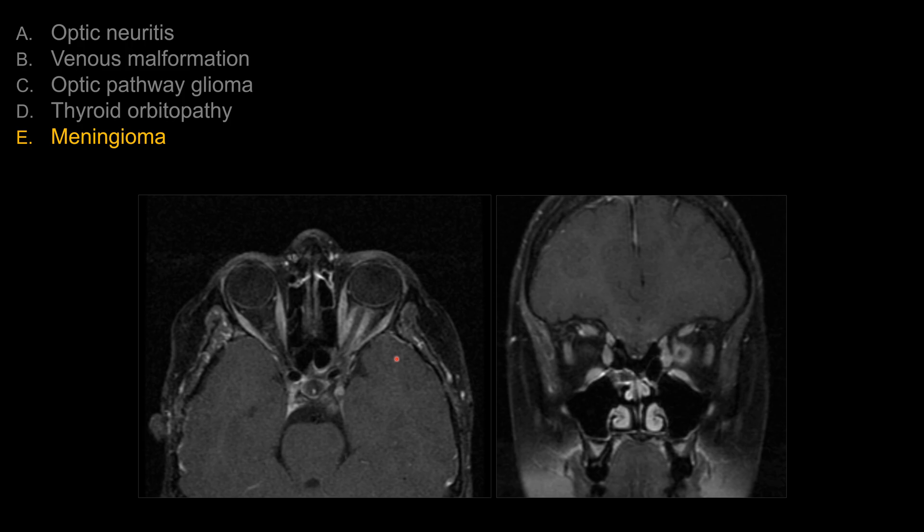Choice C, optic nerve glioma — such as you often see with NF1 in younger patients — is derived from the optic nerve itself. You see expansion of the optic nerve, and sometimes it enhances. So choice C is not it.